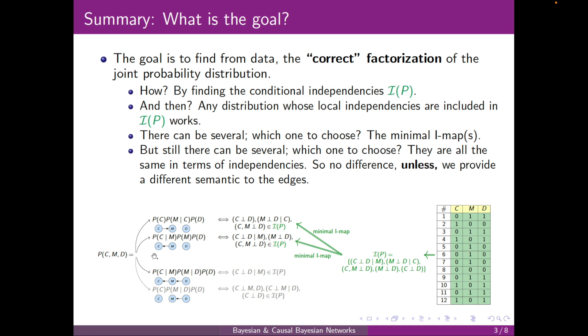And then we said that any distribution whose local independencies are included in I(P), that will work. But then we saw that there could be several of them, which one to choose. Then we introduced the notion of minimal I-maps.